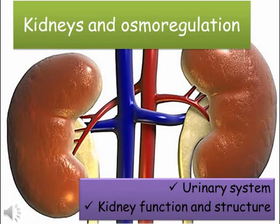In the core biology unit B1 we looked at homeostasis, which was about maintaining a constant internal environment. We learnt that water levels in the blood need to be controlled, as water is an important component in cells and is also used to regulate temperature through sweating. This video is going to take a more detailed look at exactly how water levels are controlled and how the kidney operates to filter the blood effectively.